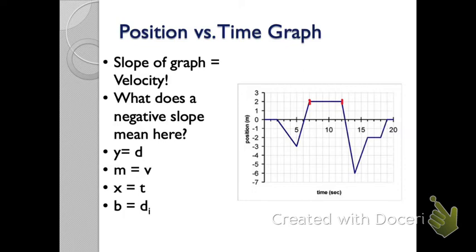From 12 to 14, what's happening? Backwards. And what would I say? Backwards what? Fast or slow? Pretty quickly, right? Because I've got a really steep slope. Here, what am I doing? Forward. Then stop.